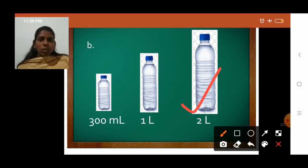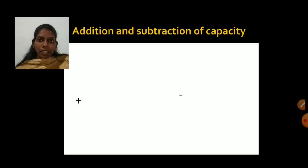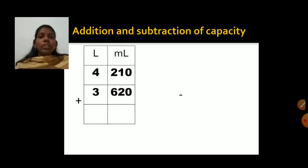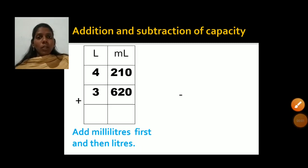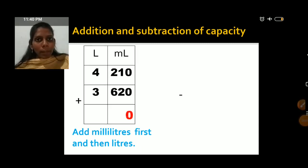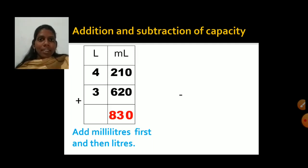Now, addition and subtraction of capacities. Same as we add and subtract length and weight, we will add and subtract capacity also. First we will add milliliters and then we will add liters. So: 0 plus 0 is 0, 1 plus 2 is 3, 6 plus 2 is 8 — that is 830 milliliters. Then we add liters: 4 plus 3 is 7. Answer: 7 liters 830 milliliters.